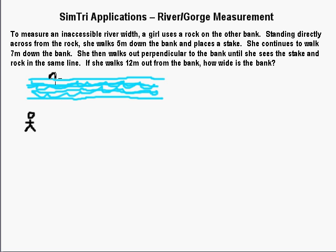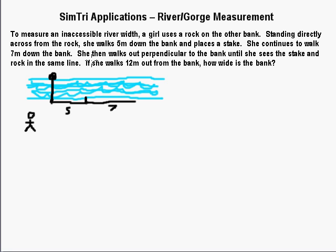Here's a rock close to the bank. She starts standing directly across from the rock and walks five meters down the bank, where she puts in a stake. She then continues to walk seven meters more down the bank — that makes the math a little bit harder. She then walks out perpendicular to the bank.